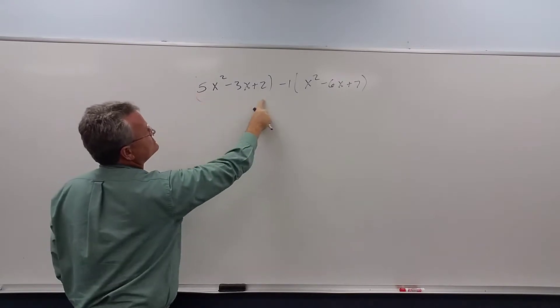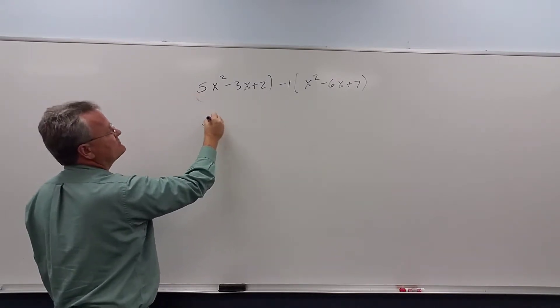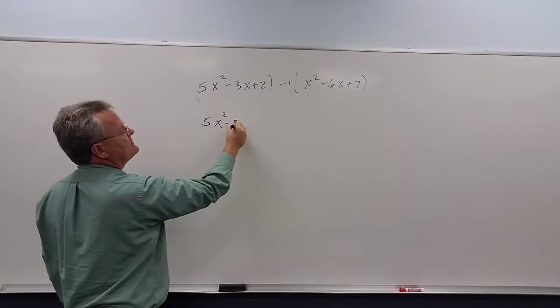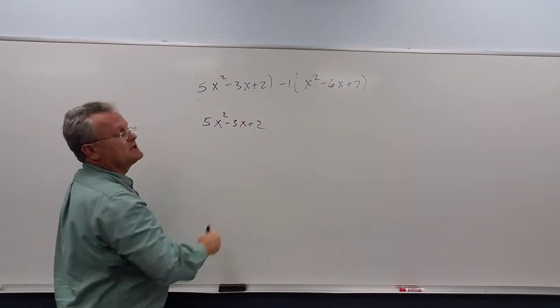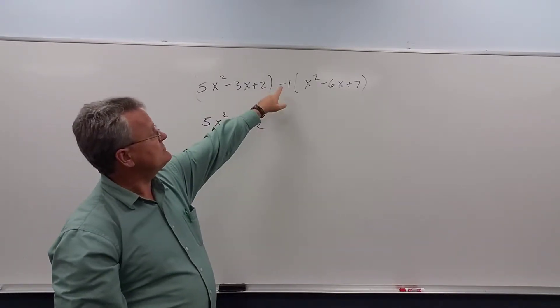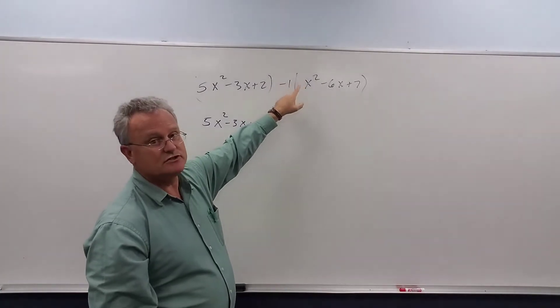So the first term stays the same. There's no negative in front. So we have 5x squared minus 3x plus 2. When I distribute this negative, it just changes the sign.